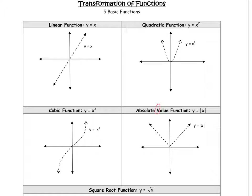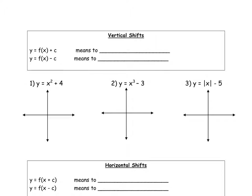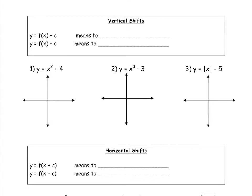It's going to be very helpful that you memorize what these five basic functions look like so that you can do the transformations. This topic of transformations is first taught in Algebra 2, so if you haven't learned this yet, please pay close attention. The first thing we're going to talk about is a vertical shift. We have y equals f of x, whatever function we have, and we're going to add c to it, which means to shift upwards — move up whatever c is.